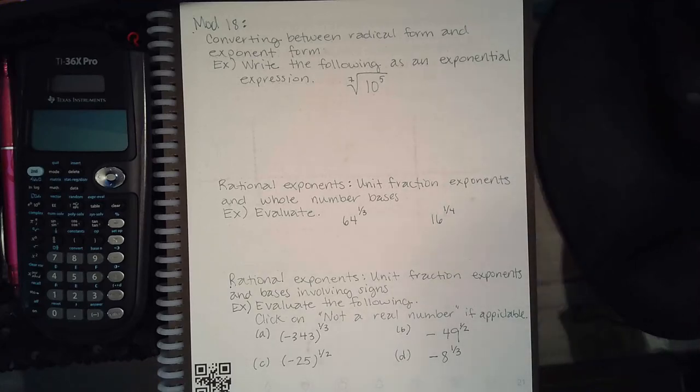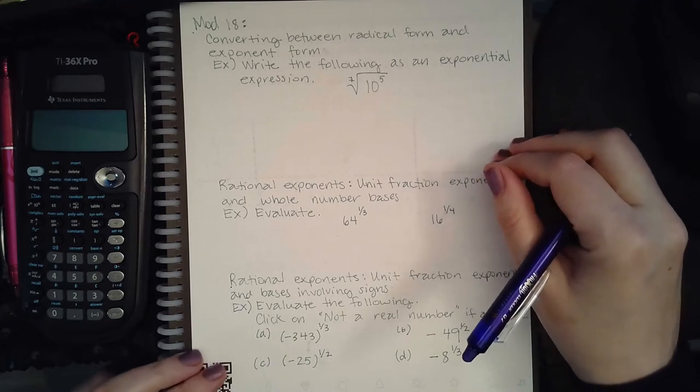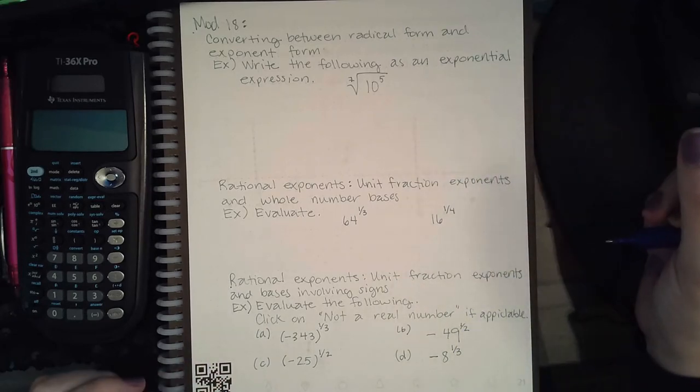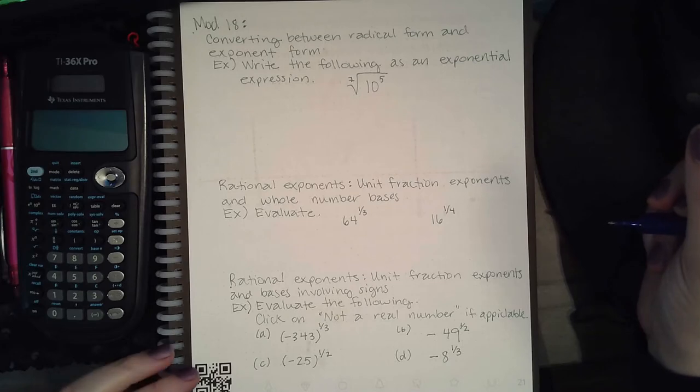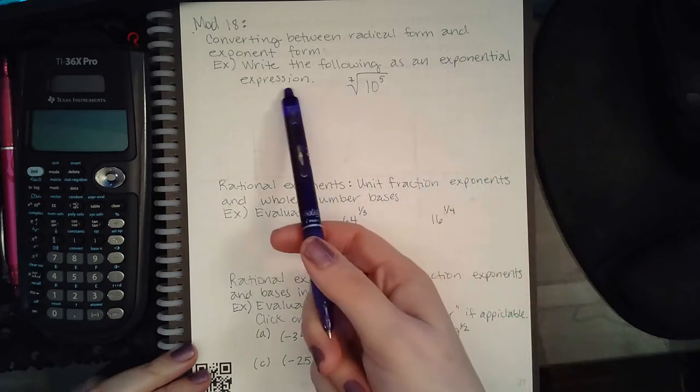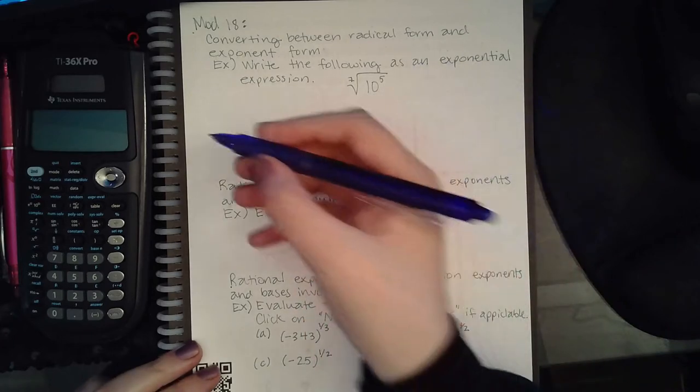Okay, this is Module 18 for the 320 modules in ALEKS. The first topic is converting between radical form and exponent form. It says write the following as an exponential expression, so first we need